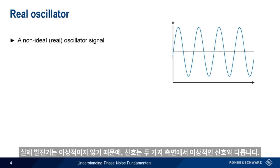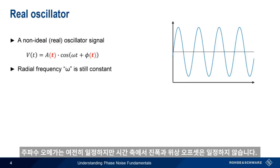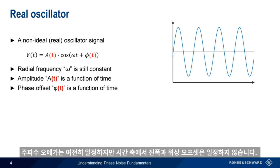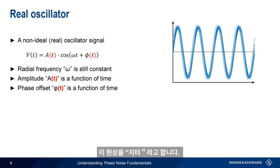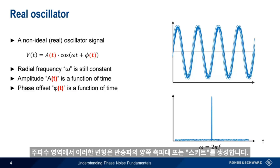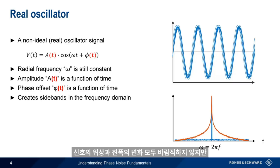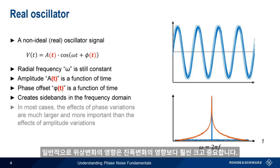A non-ideal or real oscillator signal differs from our ideal signal in two ways. The radial frequency omega is still a constant, but the amplitude and phase offset are both functions of time — in other words, the amplitude and phase of the signal are not constant. In the time domain, phase variations cause a shifting of where the sinusoid crosses the x-axis, a phenomenon often referred to as jitter. In the frequency domain, these variations create sidebands, or skirts, on either side of the carrier. Changes in the phase and amplitude of our signal are both undesirable, but in most cases the effects of phase variation are much larger and more important than the effects of amplitude variations.